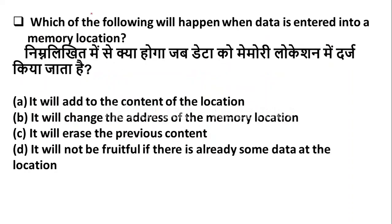Which of the following will happen when data is entered into a memory location? Option A: it will add the content of the location. Option B: it will change the address of the memory location. Option C: it will erase the previous content. Option D: it will not be fruitful if there is already some data at the location. The right answer is Option C — when data is entered into a memory location, it will erase the previous content.